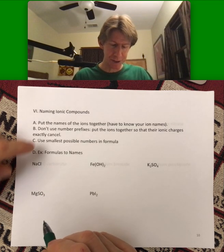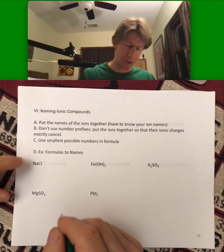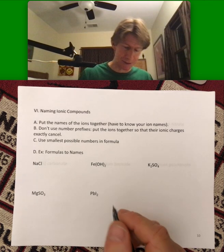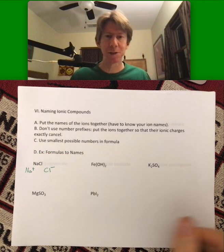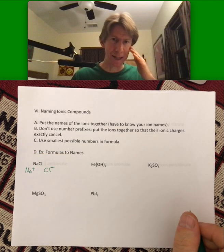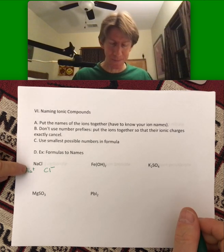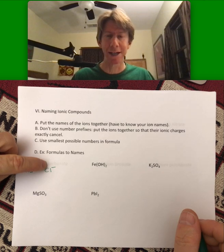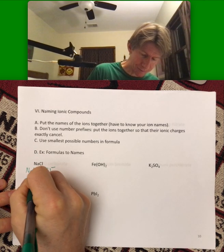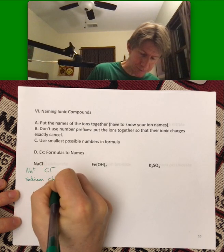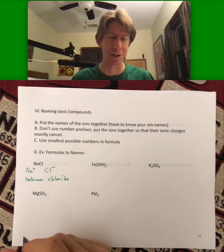So let's do some formulas to names. There's a couple ways to do this, but one thing I like to do is break it down into the ions and then think about what the ion names are. This is the sodium ion. This is the chloride ion. That's sodium chloride. There is a space between sodium and chloride. Those are two separate words, just to be clear.